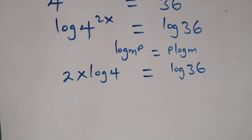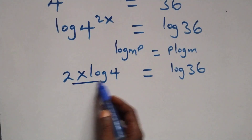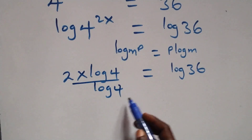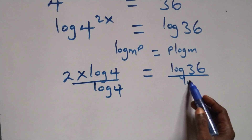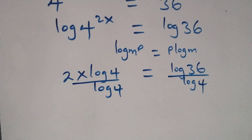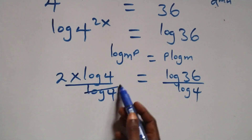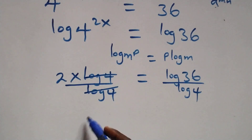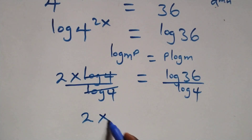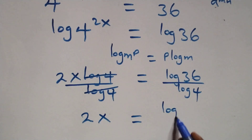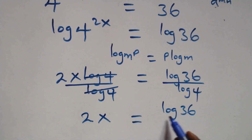From here we divide both sides by log 4 — divide this side by log 4 and also divide this side by log 4. The log 4 terms cancel each other, and what we have becomes 2x equals log 36 over log 4.